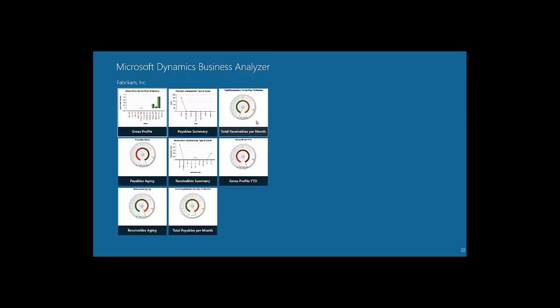When selecting a role, predefined reports for all companies will be retrieved. In our case, since we only have the sample company Fabricam reports deployed, all eight reports defined for the Accounting Manager role are displayed. If we had more companies deployed on our server, the same report would be shown for each company.